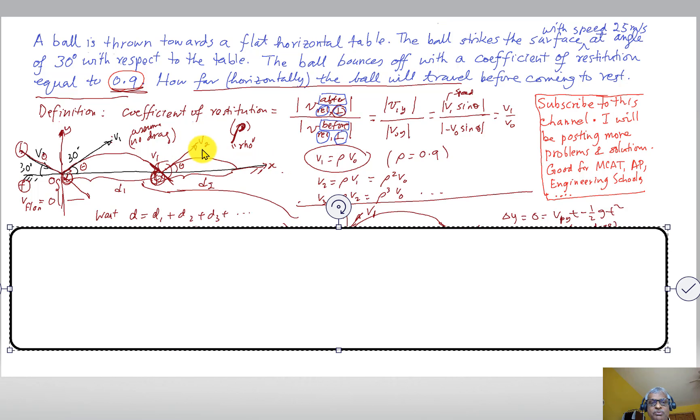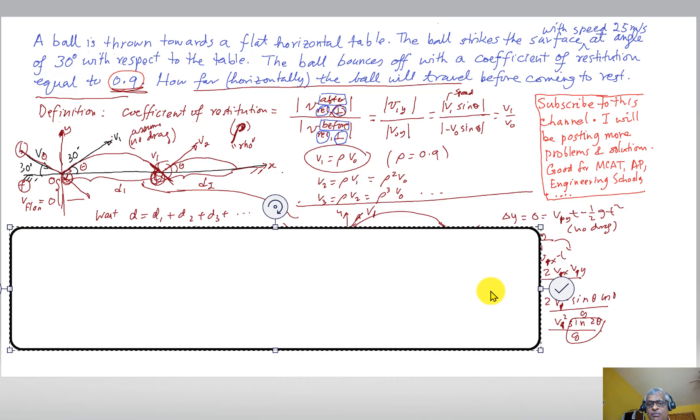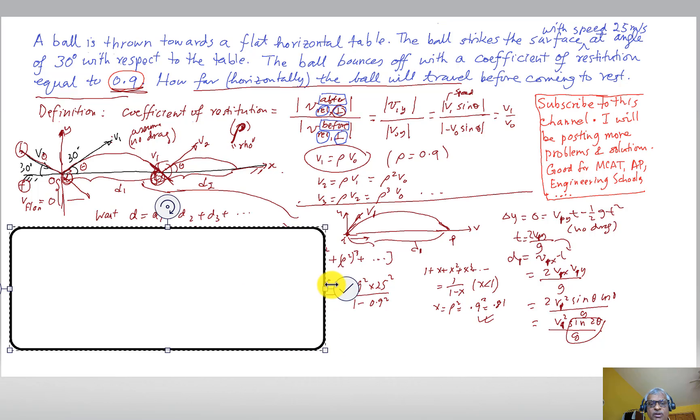Similarly, if I look over here, v₂ to v₁ will also be rho. So I can use this v₁ from here and then you can have rho squared v₀. I assume all the speeds I can write down in terms of v₀. Over here I'm going to work out one of the d's, say d₁.